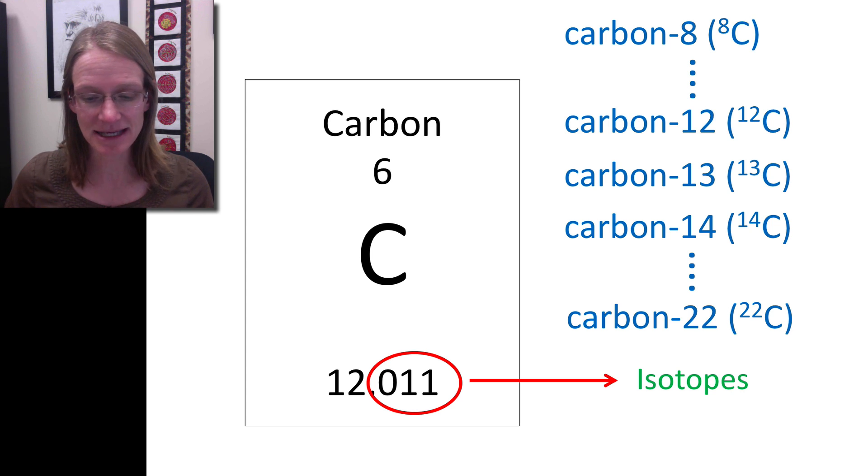There are lots and lots of what we call isotopes of carbon. These are simply the same element but they can contain different numbers of neutrons, so they change the mass.